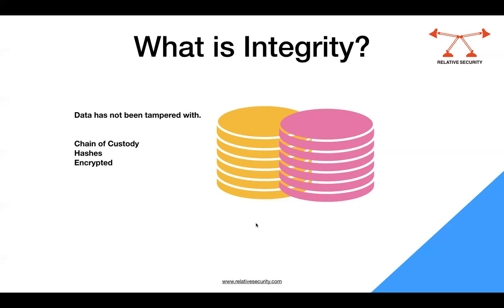You ensure that through the chain of custody. For example, from the collection point — when you are on site collecting the evidence — you collect the evidence, calculate the hash of that particular data, and hand it over to a colleague. You make sure that when you are handing over the data, the hash stays the same.